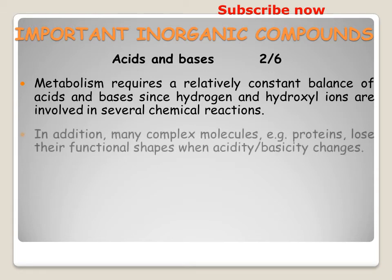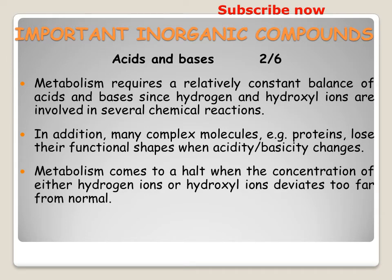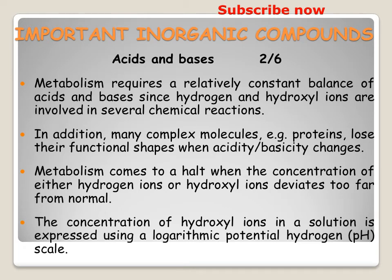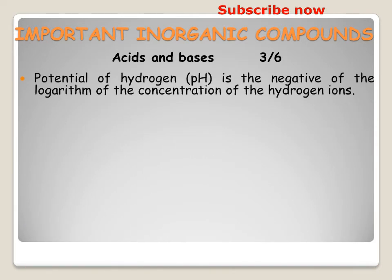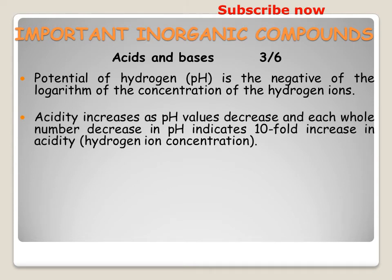In addition, many complex molecules such as proteins lose their functional shapes when acidity or basicity changes. Metabolism comes to a halt when the concentration of hydrogen ions or hydroxyl ions deviates too far from normal. The concentration of hydrogen ions in a solution is expressed using a logarithm — the potential of hydrogen, or pH scale. pH is the negative of the logarithm of the concentration of hydrogen ions. Acidity increases as pH values decrease, and each whole number decrease in pH indicates a tenfold increase in hydrogen ion concentration.